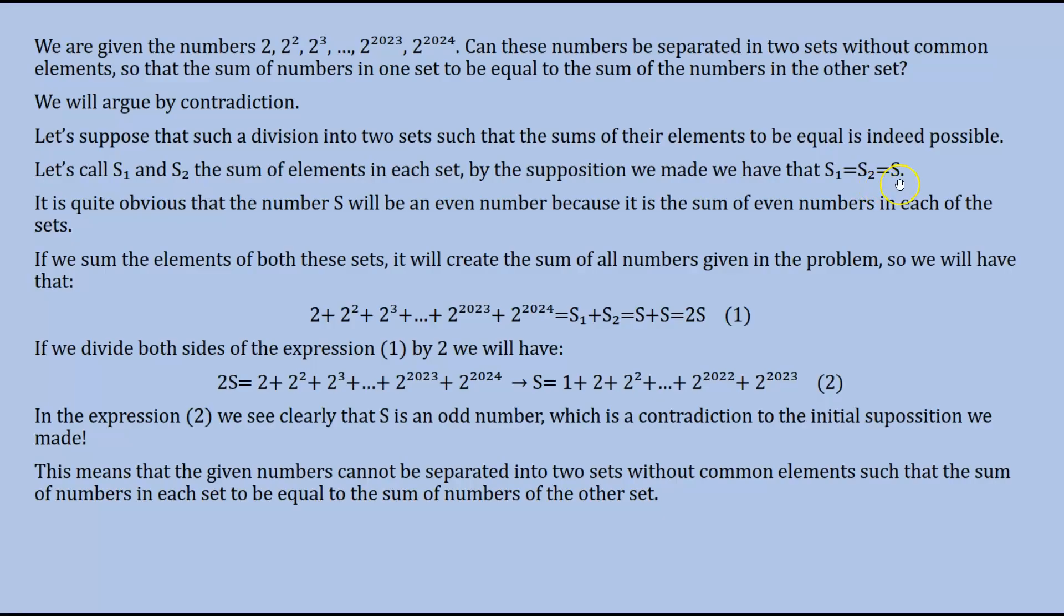But this is a clear contradiction to the initial supposition we made, that S will be an even number, because it is equal to S₁ and S₂. And all the elements of S₁ and S₂ are even numbers, so their sum will also be an even number. So we have this contradiction that S over here is an even number, while down here, S is an odd number.